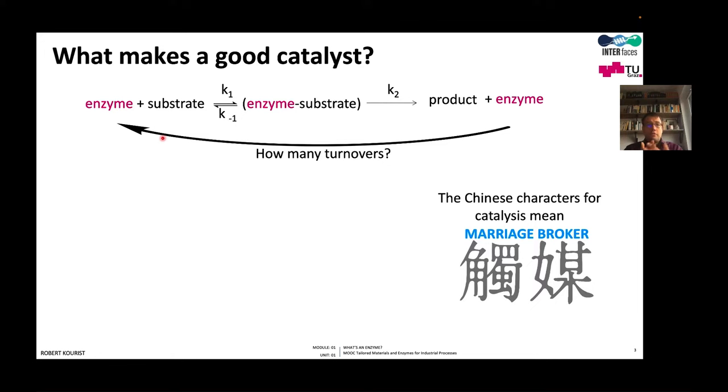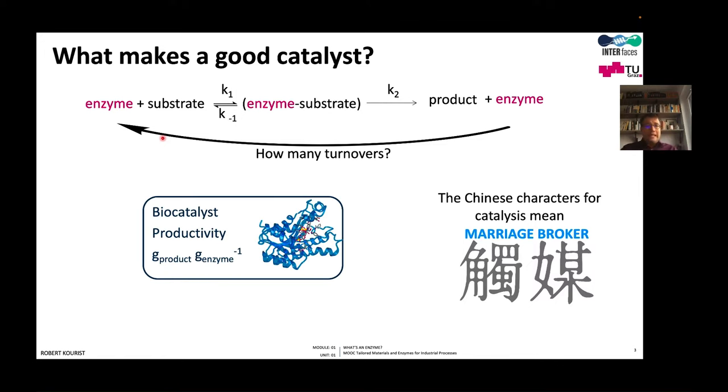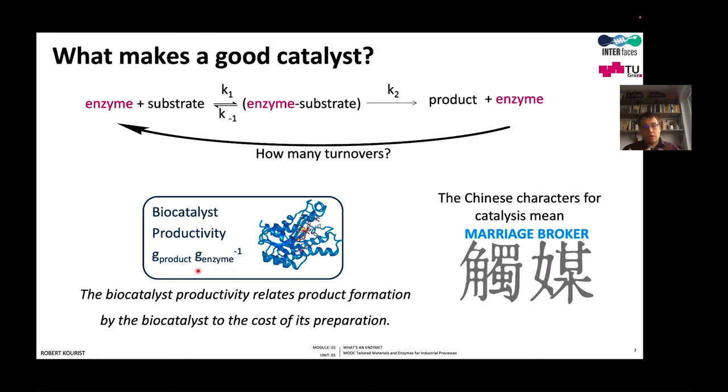A simple property of a good catalyst is we want this catalyst to catalyze many turnovers, as many as possible. Actually, for an industrial process, we need turnovers in the thousands or even in the millions. It is sometimes difficult to measure moles. We want to know how many moles of product we can make with one mole of enzyme. But if we have an immobilized enzyme, or if we extract from a fungus which produces our enzyme, we often do not know how much enzyme we have. Therefore, the productivity of a biocatalyst is expressed as the gram product per gram enzyme. Or in different words, if we make one kilogram of biomass containing our enzyme, how many tons of product can we produce? So the biocatalyst productivity relates the product formation by the biocatalyst to the cost of its preparation.